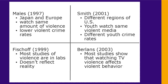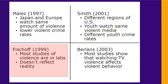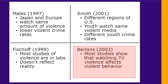You find different ideas in different sources. In this example, one source points out that in Japan and Europe, children watch just as much TV violence but commit less violent crime. Another says that in different regions of the US, children watch the same levels of TV violence but have different levels of violent behavior. A third argues that many of the studies on TV violence take place in a lab, which doesn't reflect reality. And a fourth argues that TV violence is strongly associated with aggressive behavior in children.